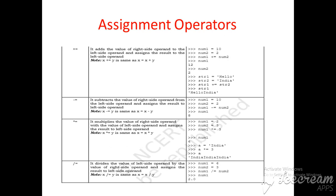For example, num1 is equal to 10 and num2 is equal to 2. Here, num1 += num2 means num1 = num1 + num2, so num1 becomes 10 plus 2, which equals 12. Similarly, str1 is equal to 'hello' and str2 is equal to 'india'. str1 += str2 means str1 = str1 + str2, giving 'hello india'.